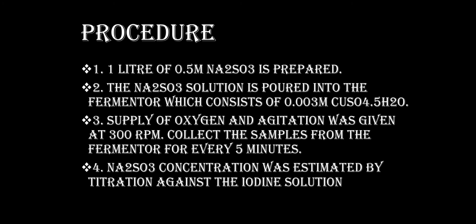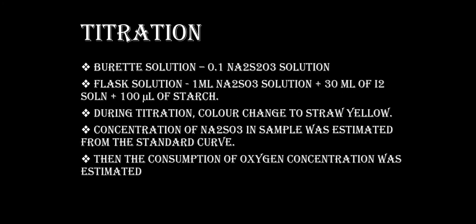Samples are collected from the fermenter every five minutes, and the sodium sulphite concentration is estimated by titration against iodine solution. For the titration, the burette solution is 0.1 molar Na₂S₂O₃ sodium thiosulphate solution. The flask solution is 1 ml of Na₂SO₃ solution plus 30 ml of iodine solution, then 100 µL of starch solution. During titration, the color changes to straw yellow.